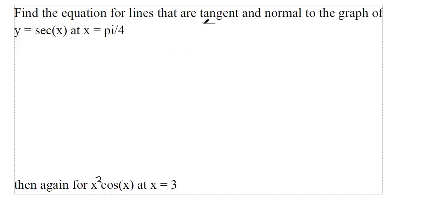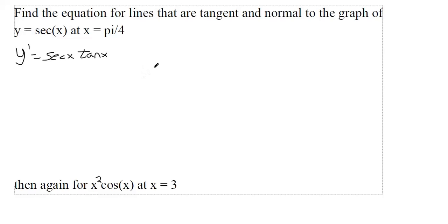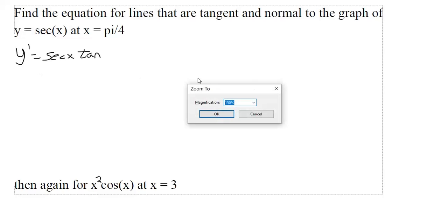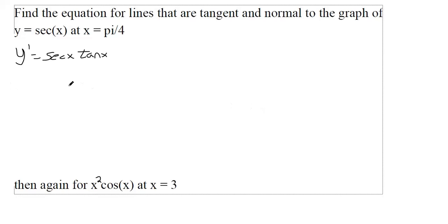If we want an equation of a line that's tangent, we want the instantaneous slope at π/4, so we want a derivative. The derivative of secant is secant x times tangent x from our text. And if we want the slope of the tangent line, it means we want the slope at this instant — at π/4. So I'll plug in π/4 for x.